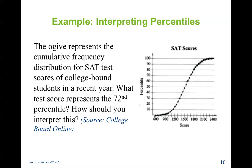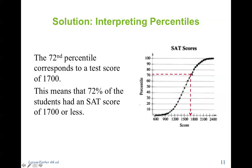So interpreting percentiles. The ogive represents the cumulative frequency distribution for SAT test scores of college-bound students in a recent year. What test score represents the 72nd percentile? So I go over here on the left, the y-axis, and go up to 72. And then I would trace that all the way to the ogive over here until I hit it. And then once I hit it, I'll notice that I'm about 1700. Therefore 72% corresponds to a test score of 1700. That means 72% of the students that took the SAT scored at or less than 1700.